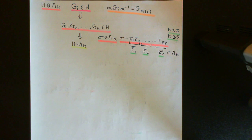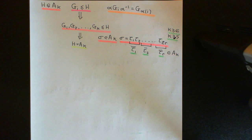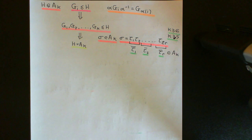Welcome back to this next video in which we are proving that the alternating group on the set of n elements is simple whenever n is greater than or equal to 5. We're proceeding by a proof by induction, and we're trying to show that the alternating group on the set of k elements is simple.